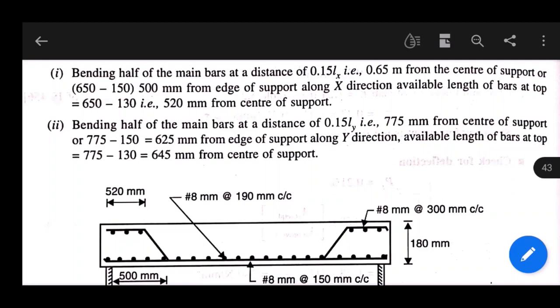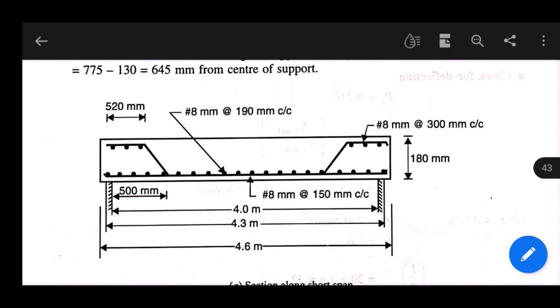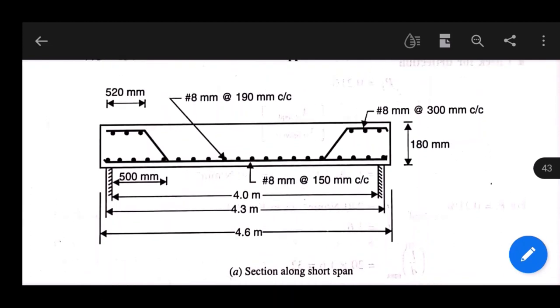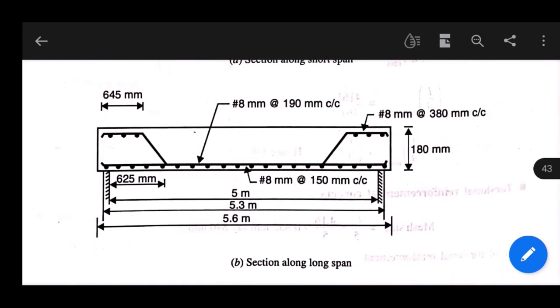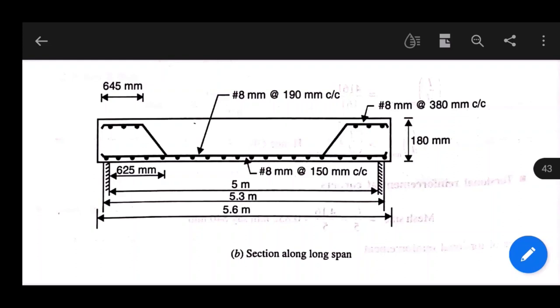Regarding this reinforcement arrangement, we have to draw figures. This is a longitudinal section of short span. From the drawing you can see the overall length, effective length, and distance of bent up bar. Everything is written in the drawing. Next drawing is along long span. The span length changes as per our question and calculation. These are the lengths and distances of bent up bar in lower and upper portions.